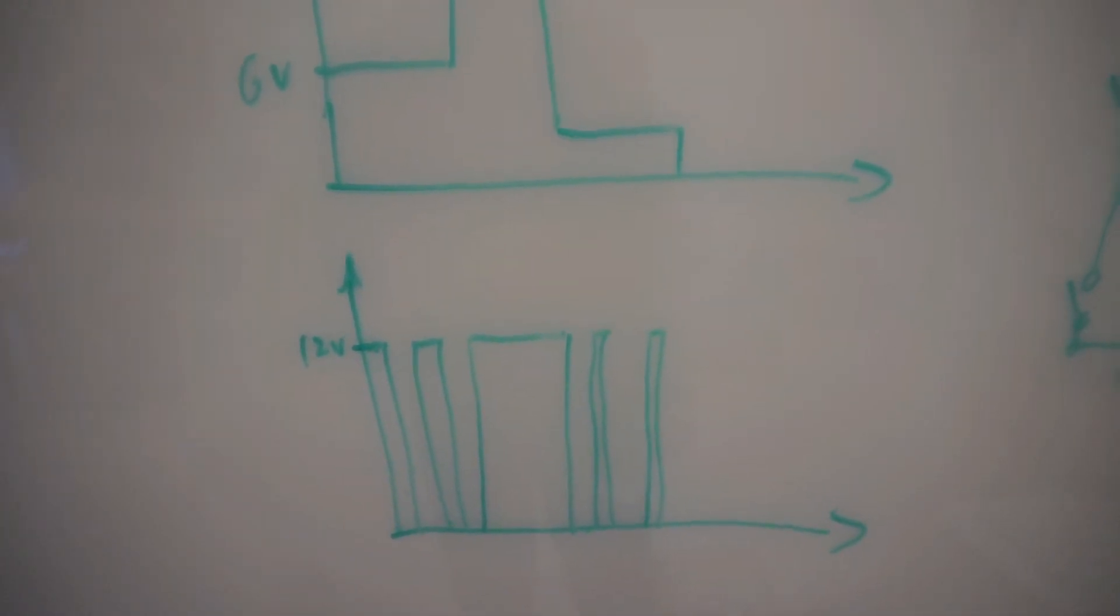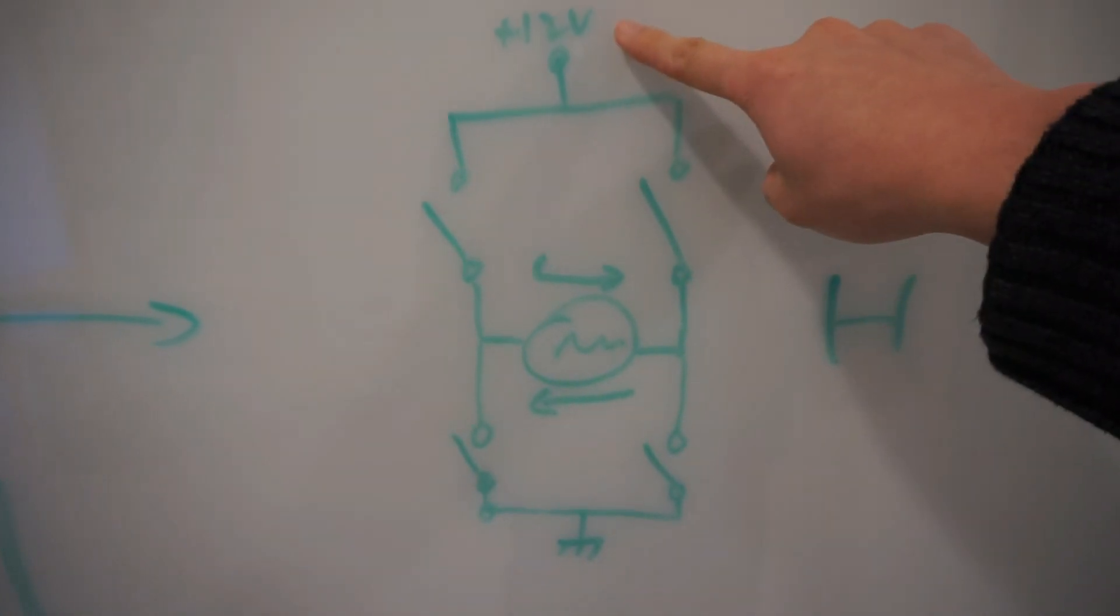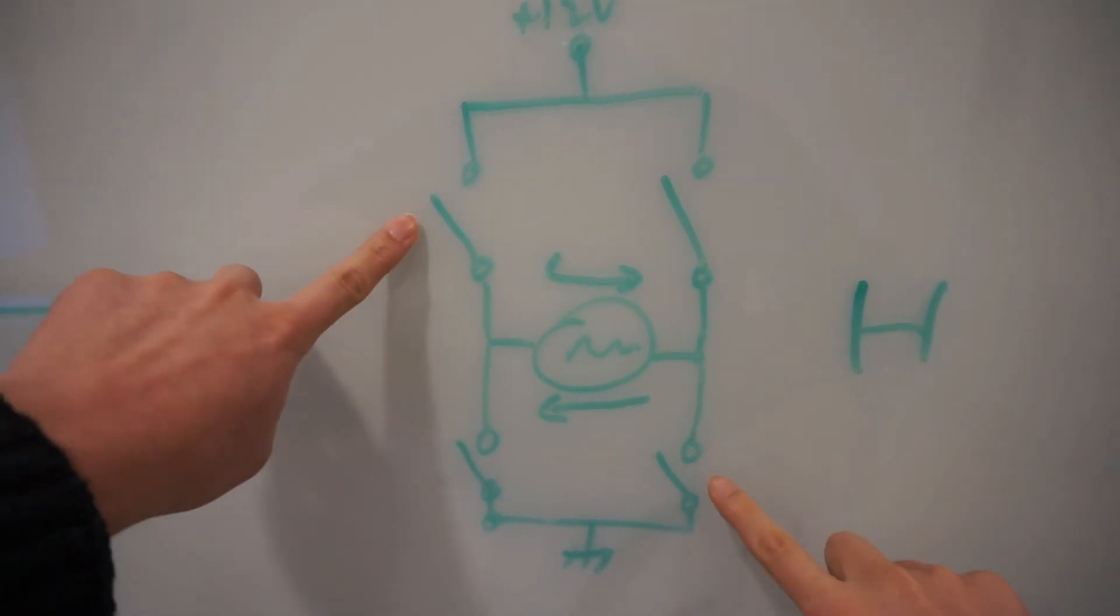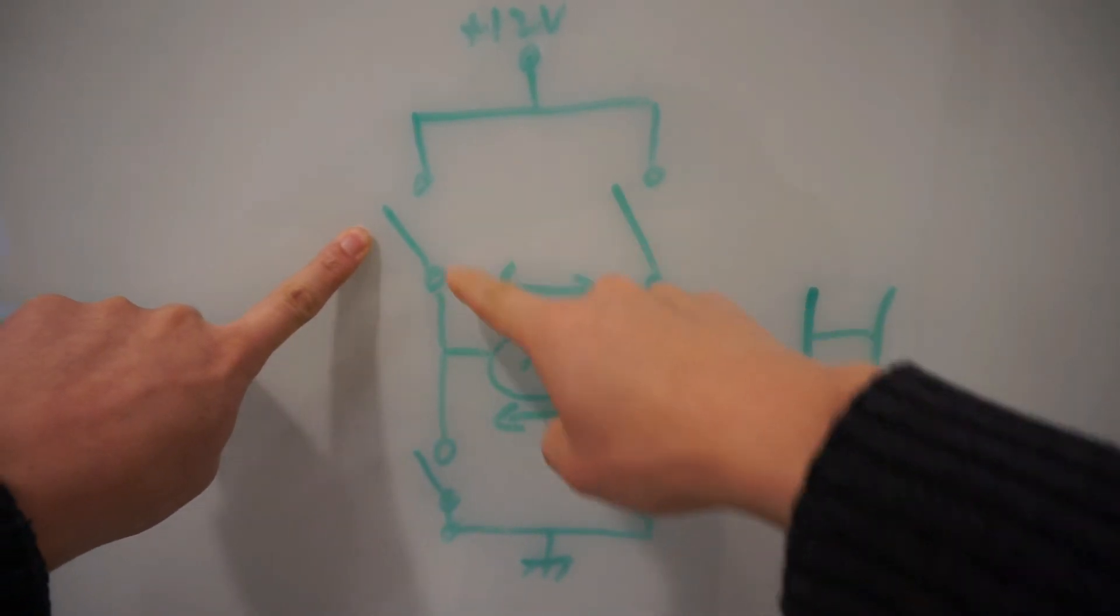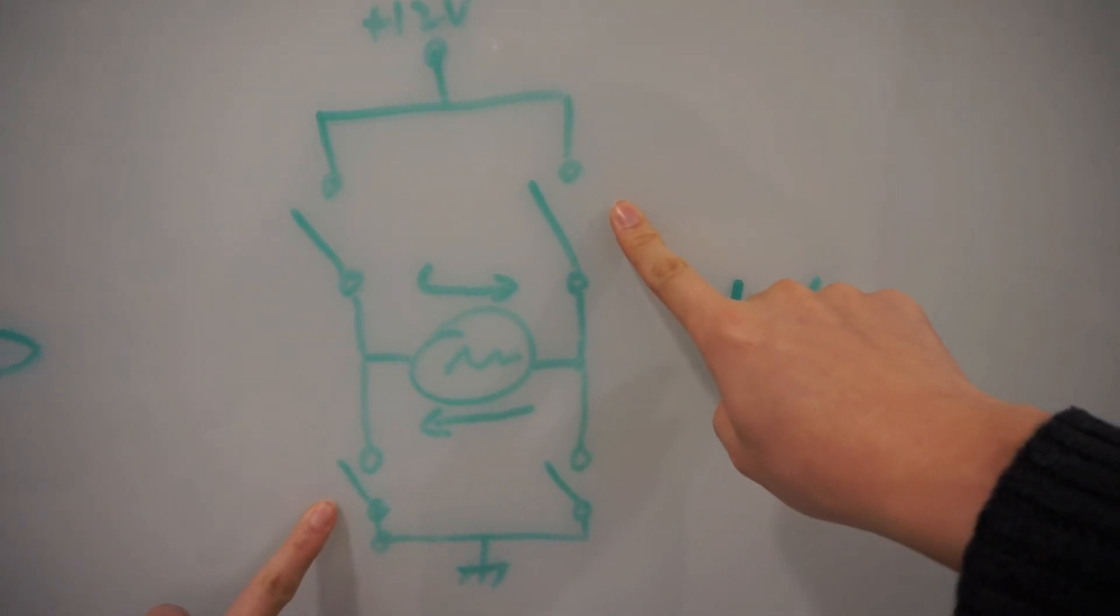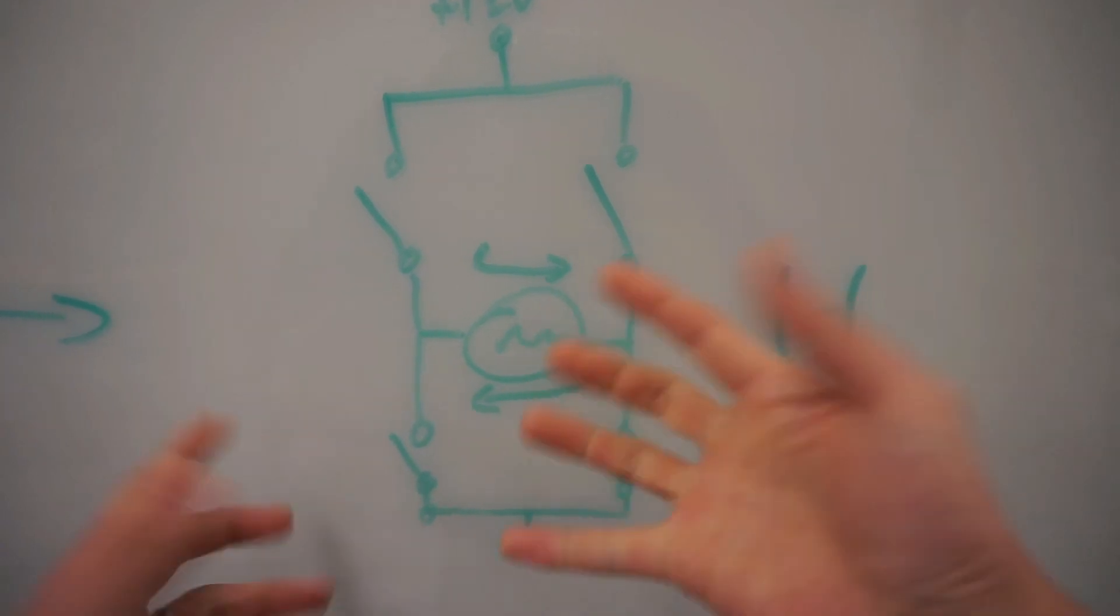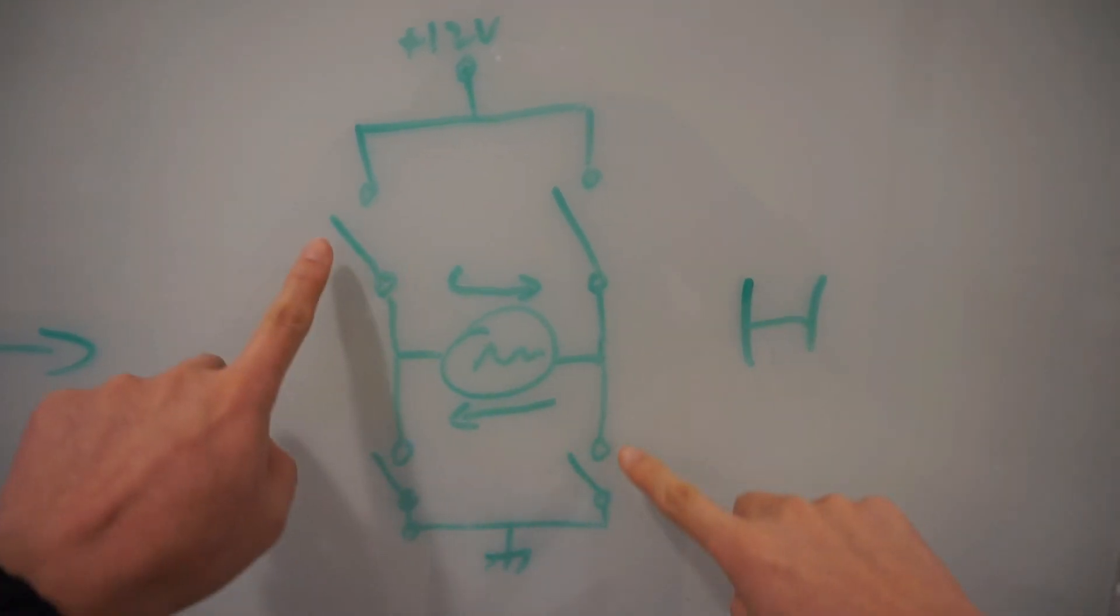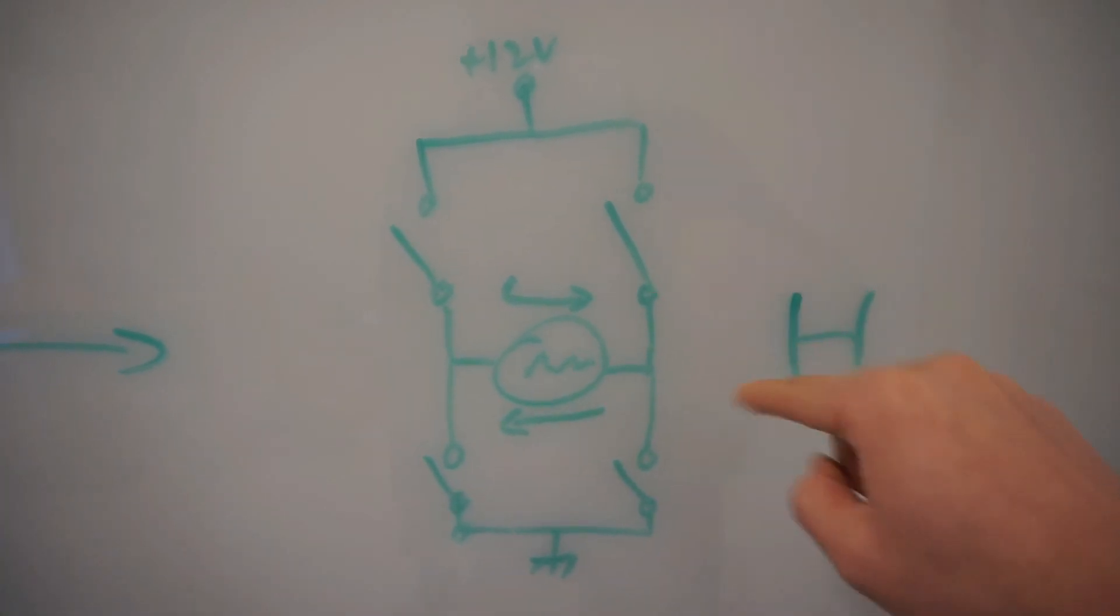When we control a motor, we want to control forward, backward, and any given speed, so we use an H-bridge. When these two switches are on, current flows forward. When those two are on, current flows backward. You can control the motor's movement, including speed and direction, by adjusting the duty cycles of those switches. It's called an H-bridge because it's shaped like an H.